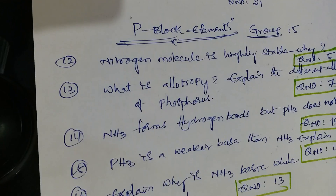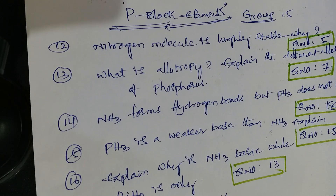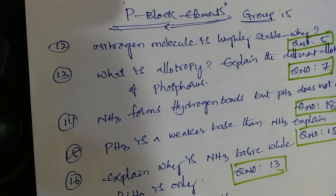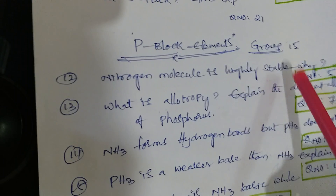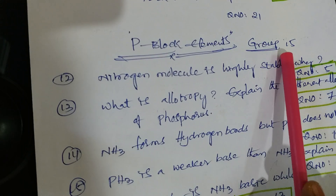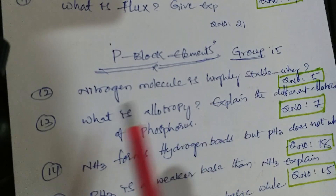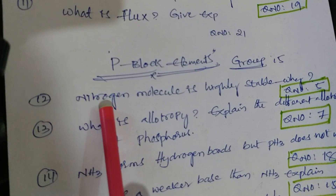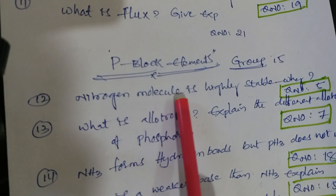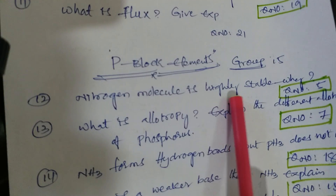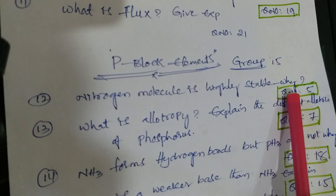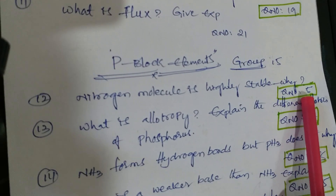Next one is P-block elements, 15th group elements. First question: nitrogen molecule is highly stable - why? That is question number 5.